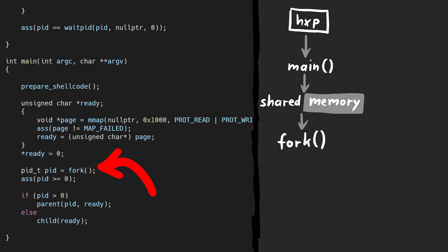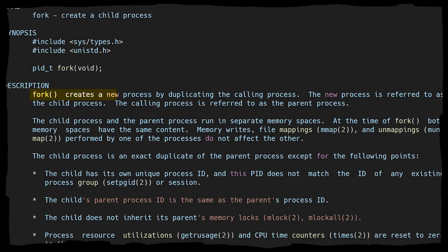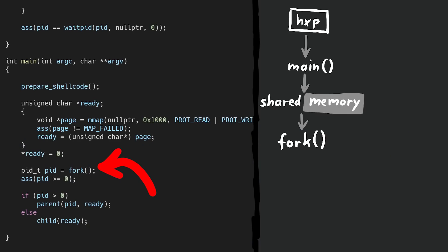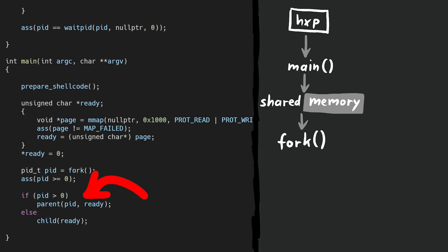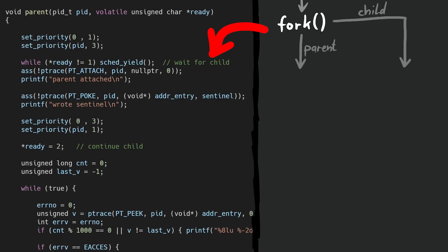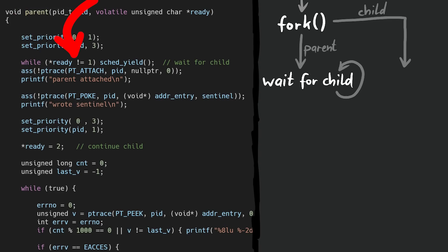After that we create two processes by calling fork. Fork creates a new process by duplicating the calling process — the new process is referred to as the child process, the calling process as the parent process — and they run in separate memory spaces. That's why we created the shared memory area before, because that memory will actually be shared. After the fork, execution branches into two processes. The parent waits for the child by having a while loop checking if ready equals 1. We set it to 0 before, so the child should at some point write a 1 into the shared memory to signal to the parent that it's ready.